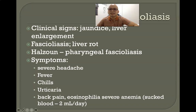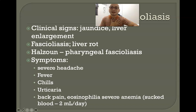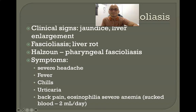Clinical signs of Fasciola hepatica infection include jaundice and liver enlargement. The disease is called fascioliasis, otherwise known as liver rot. In cases where the pharynx becomes congested with the parasite, this results in pharyngeal fascioliasis, also known as halzoon. Symptoms include severe headache, fever, chills, urticaria, back pain, eosinophilia, and severe anemia.